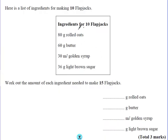All you're doing here is saying, I've got to keep everything in proportion. So if I double everything, that would be how many to make 20. If I half everything, that would be how many to make 5. So I'm going to use 5 flapjacks here. If I half everything, I need 40 grams of rolled oats, 30 grams of butter, 15 milliliters of golden syrup, and 18 grams of light brown sugar. That's how many for 10. We've just worked out what it would be for 5 by halving everything.